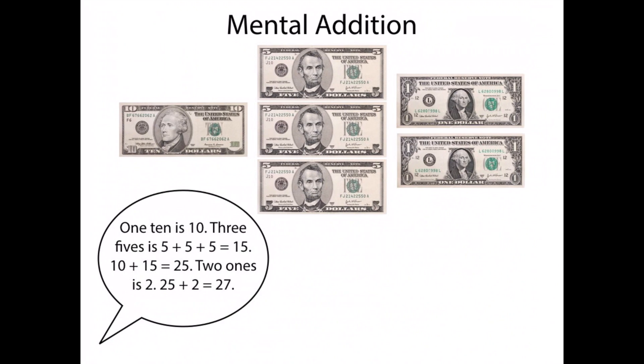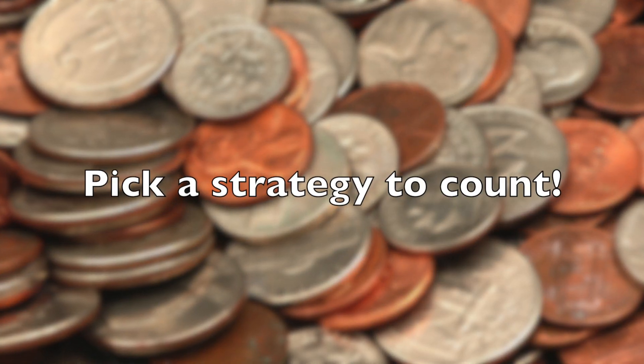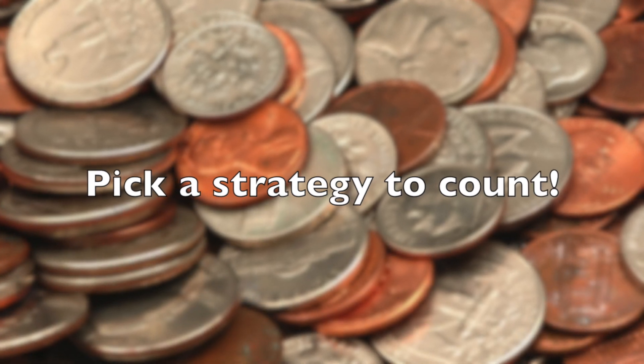You could also use the mental addition for the dollar bills. Think how one $10 is $10. Three $5s is $5 plus $5 plus $5 equals $15. 10 plus $15 equals $25. Two $1s is $2. So $25 plus $2 equals $27. So now, as you have been introduced to those various strategies, I would like you to pick one, or try out a couple different ones to see which one you like the best.